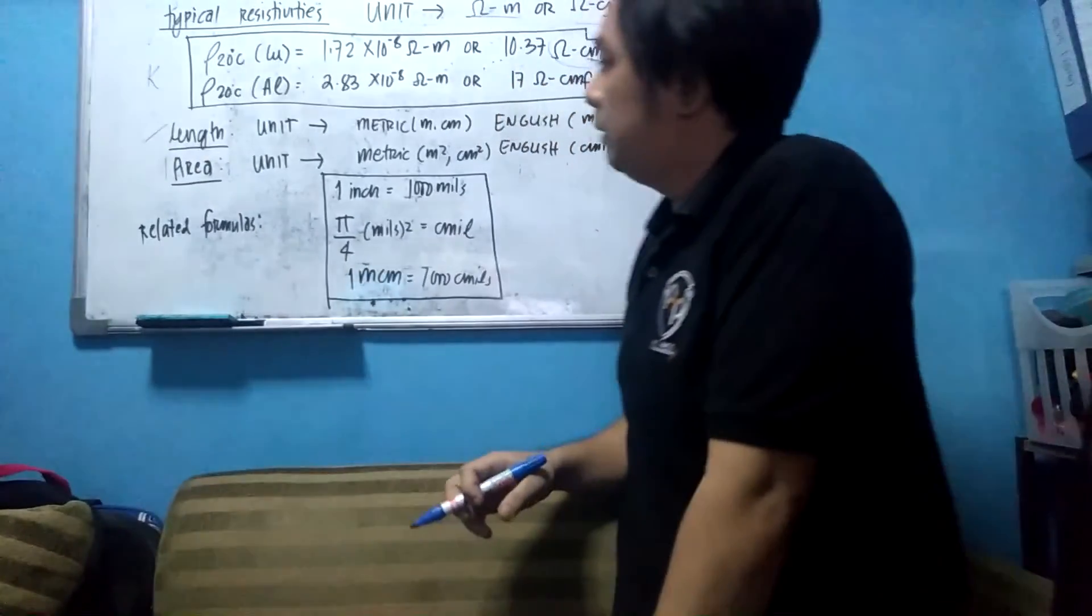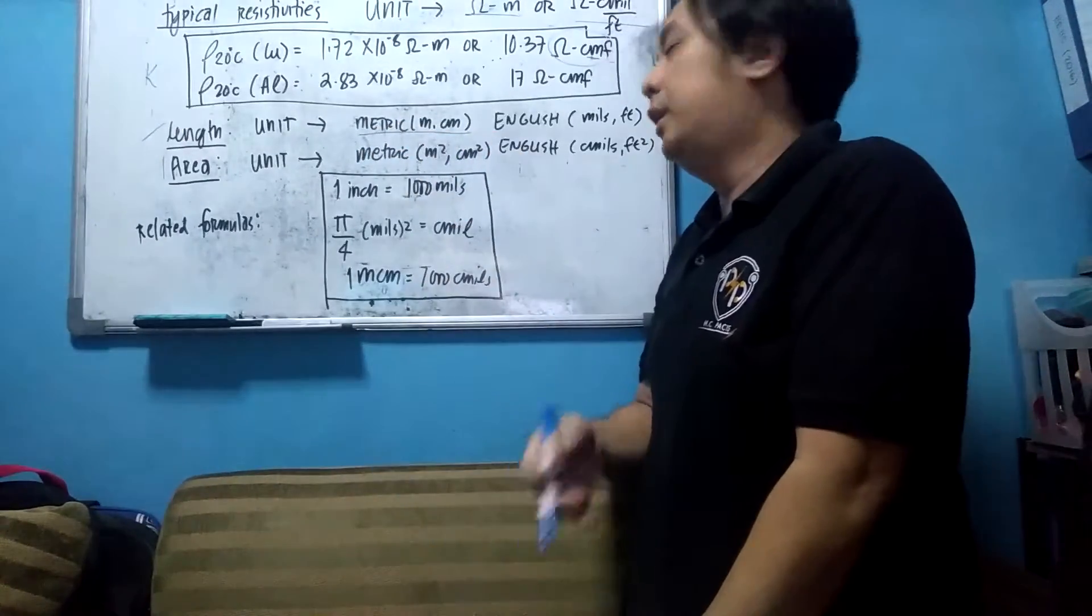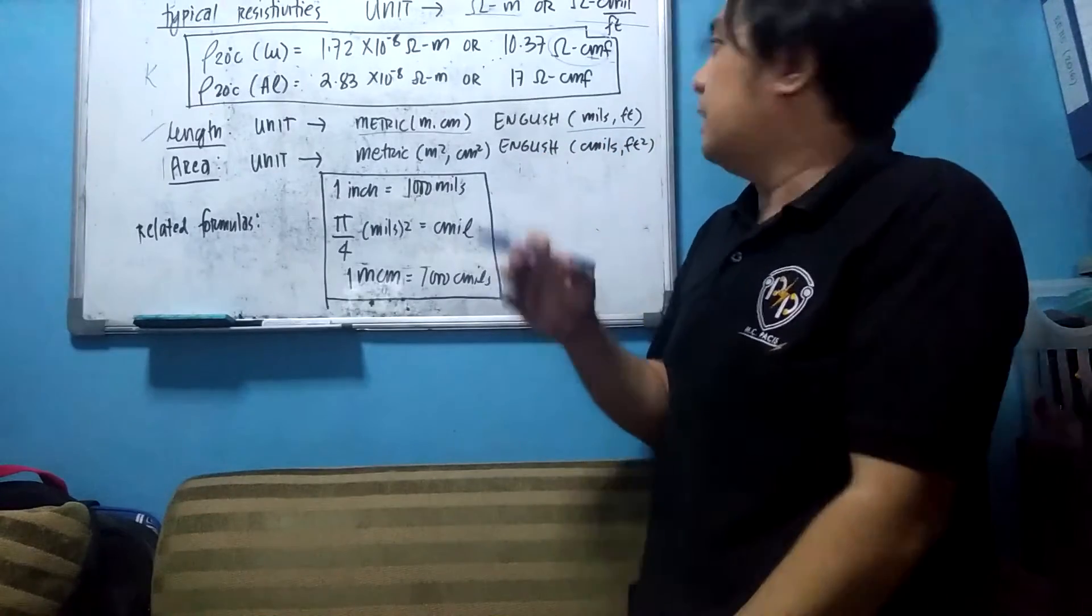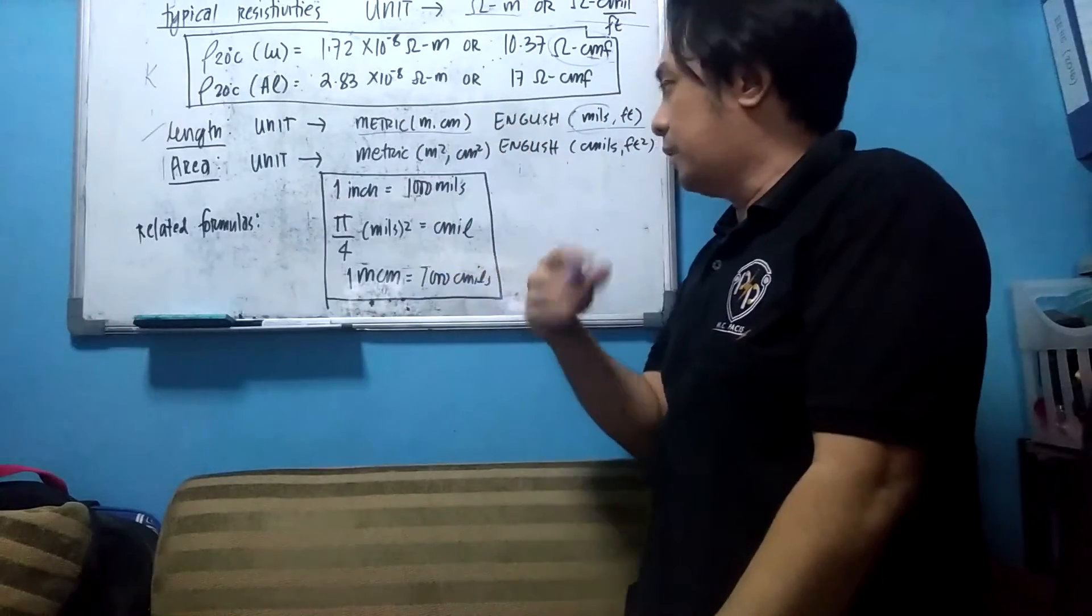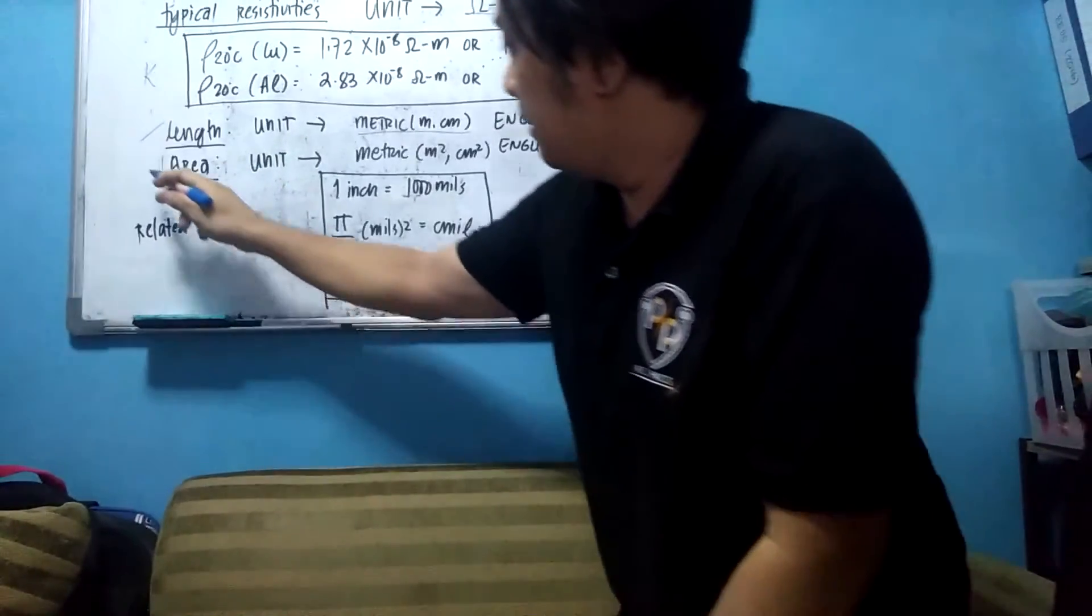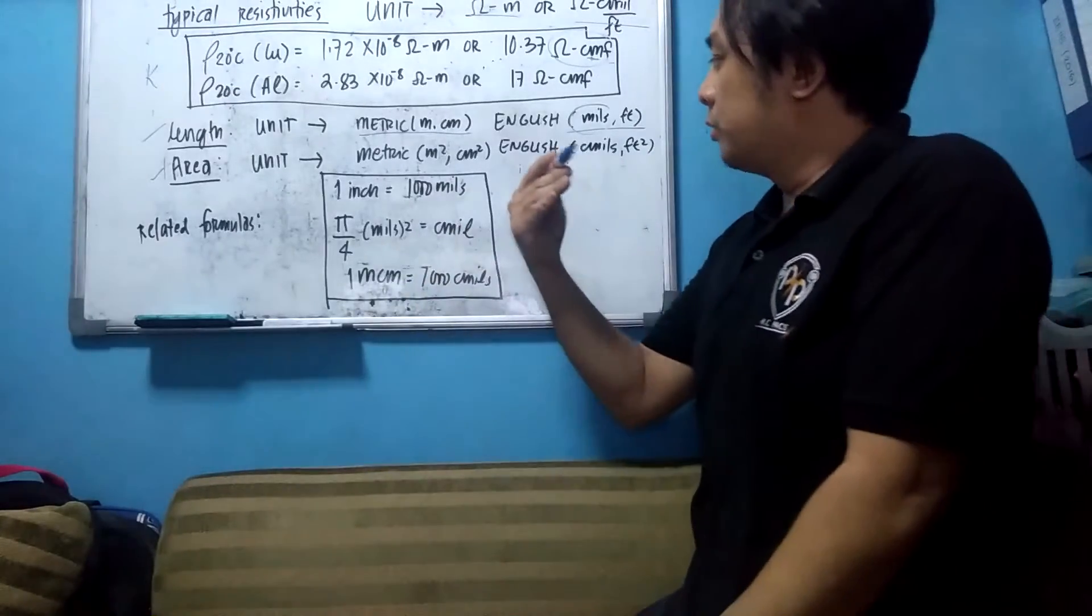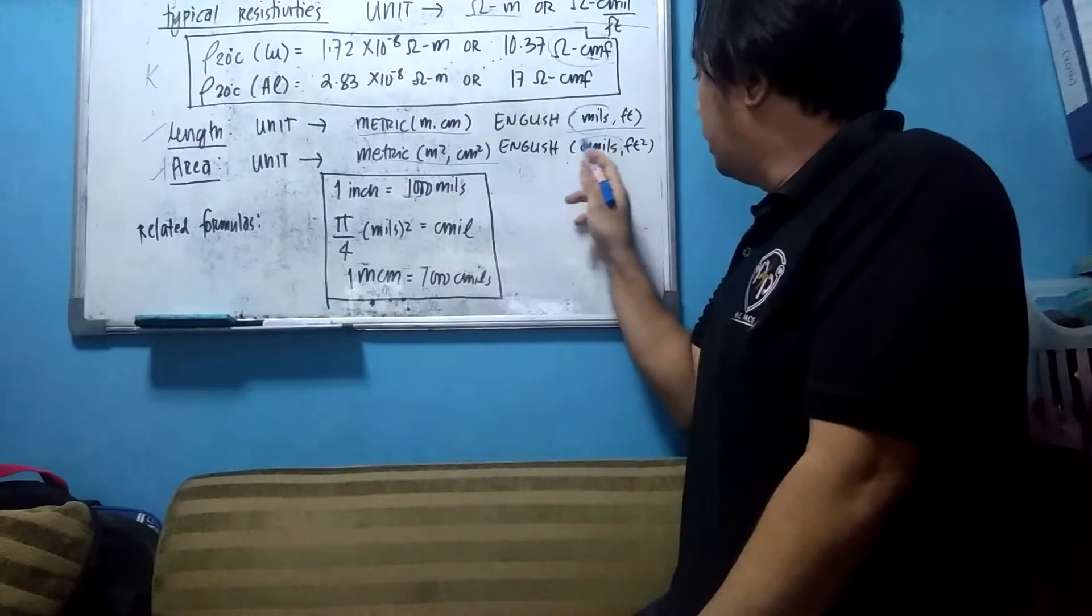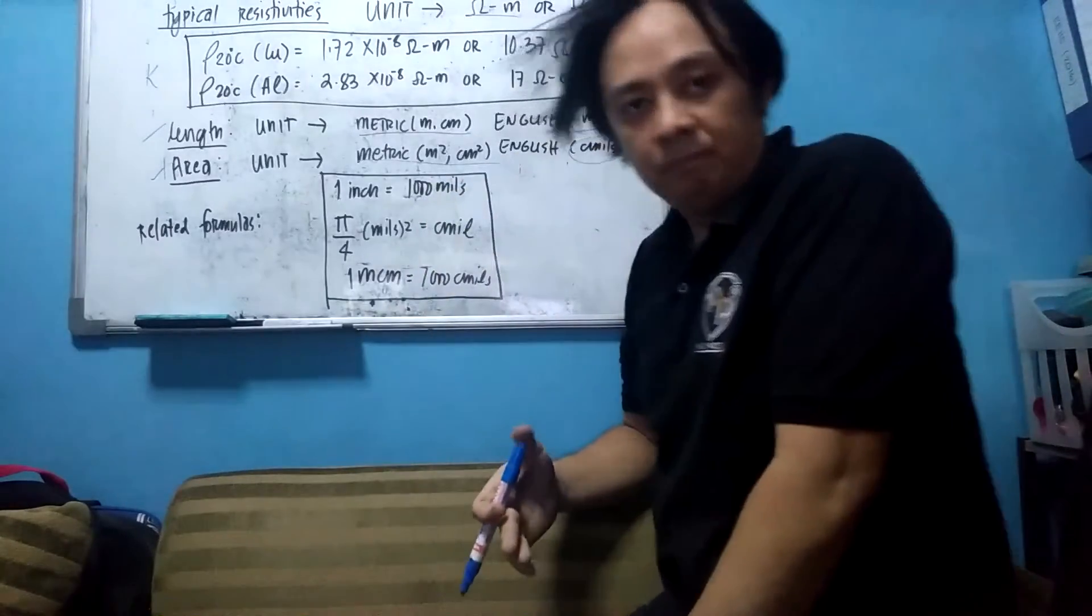Now there are also the units for length. It is metric meter, centimeter, millimeter or English mills feet. So it means a circular mill is a unit of area while mills rather is a unit of length. So area, the unit is metric. In metric units, meter squared or centimeter squared or millimeter squared. But in English, you have circular mills as stated a while ago, feet squared, inch squared, etc.